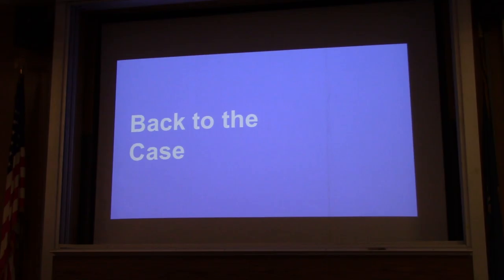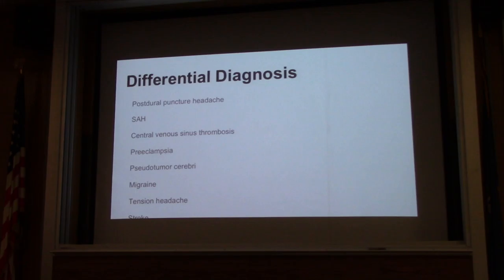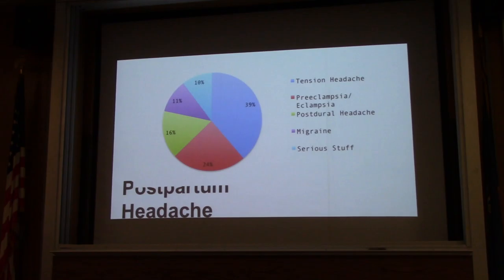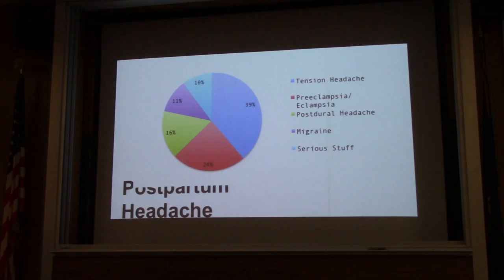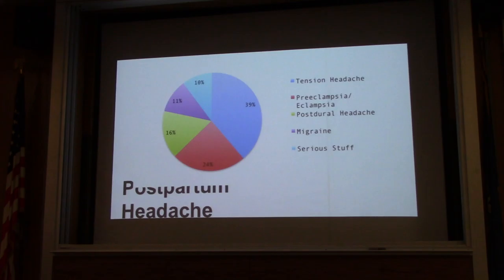Going back to the case of our 42-year-old woman presenting six days after C-section delivery with headache and hypertension. In one retrospective series of 95 women presenting with postpartum headache, this is the distribution of final diagnoses. For the most part, it's usually tension headache or migraine, which we don't have to worry too much about. But about 24% are preeclampsia or eclampsia, there's a 16% postdural puncture headache, and about 10% are more serious, such as intracranial hemorrhage, mass, or central venous sinus thrombosis. You have to keep it in the back of your mind that there could be something serious such as central venous sinus thrombosis, hemorrhage, or eclampsia.